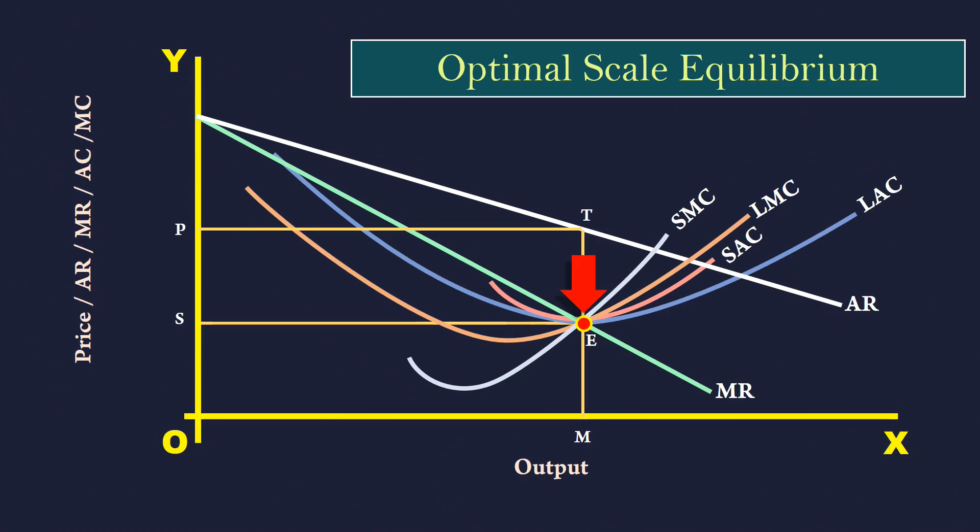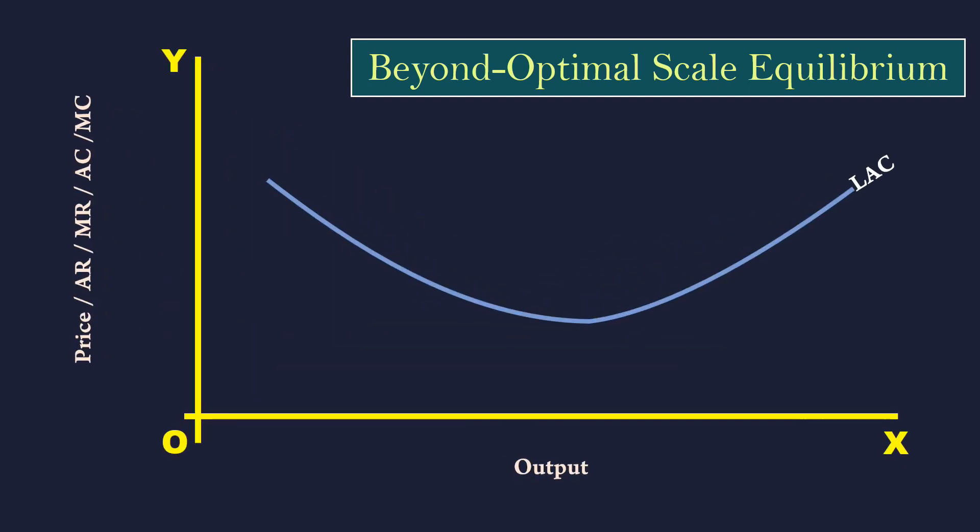In this lesson, we are going to see the third possibility that is beyond optimal scale equilibrium. The monopoly firm can be in equilibrium and operate on the rising side of the LAC curve and still enjoy super normal profit. It is the market condition which makes such a thing possible.